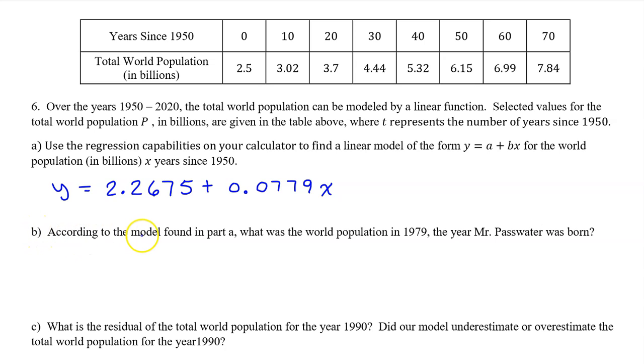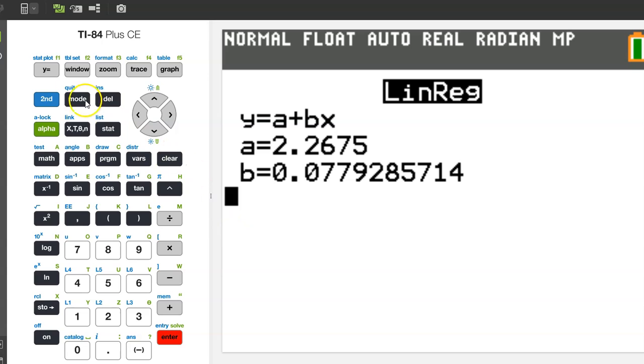Part B. According to the model found in Part A, what was the world population in 1979, the year Mr. Passwater was born? 1979 is 29 years after 1950, so Y at 29 will estimate the world population in billions in 1979. Because we stored the regression model in Y1, we can use the graphing calculator to evaluate Y1 at 29.